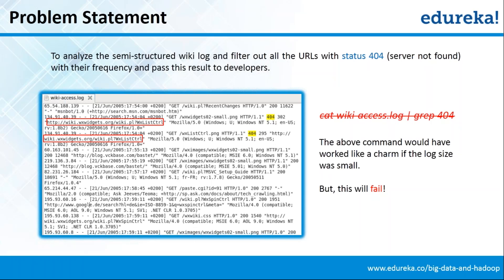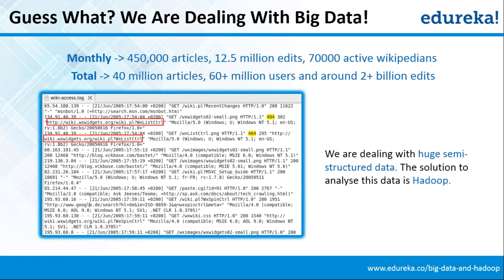Now if we do this job the classic Unix way using a simple command like 'cat wikiaccess.log | grep 404', this will give me all the URLs which gave 404 status. But will this command work? The answer is no. We are not dealing with a small data size. When you are analyzing a Wikipedia log file which is 6 months old or even a year old, the amount of data is huge. Hence the grep command won't work here — we are dealing with big data.